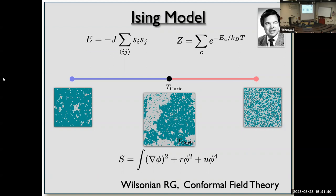So the Ising model was a central part of the development of the renormalization group. I spoke about spontaneous symmetry breaking and critical phenomena; now I want to take a small detour before discussing one more development: duality.